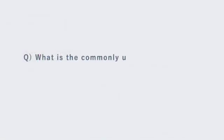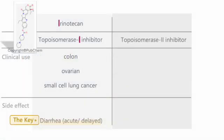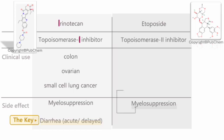What is the commonly used topoisomerase 2 inhibitor? Etoposide is one of the famous topoisomerase 2 inhibitors that is commonly used. Its notable side effect is myelosuppression. Both topoisomerase 1 and 2 inhibitors have strong bone marrow suppression. Specifically, topoisomerase 2 inhibitors are used for leukemia.